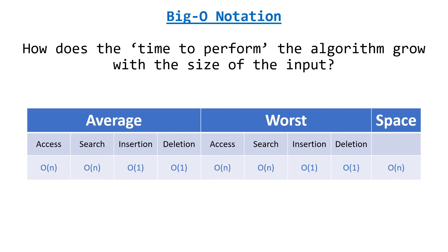For space complexity, we're just working with the size of the doubly-linked list and no other storage is needed to perform these algorithms, so it's big O of N. Well, I hope you've learned something, and if you have any questions or comments I will get back to you as soon as possible. I'll see you next time.